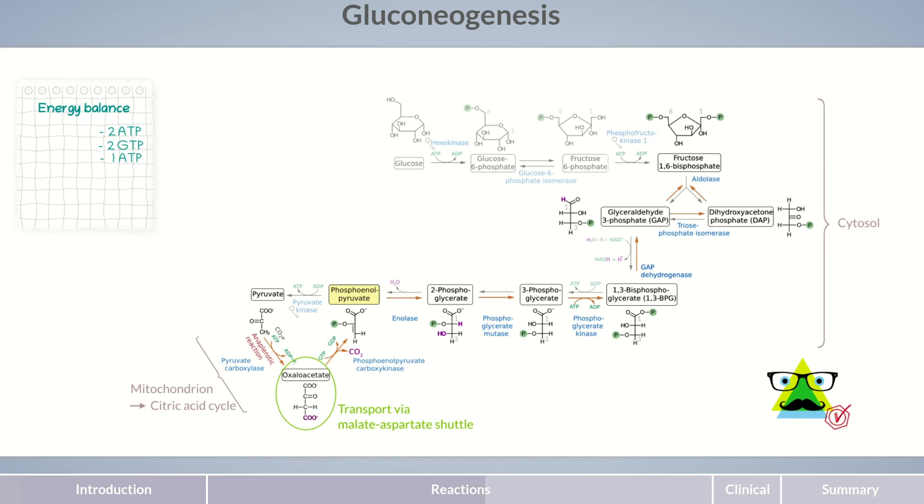Again, for each molecule of glucose, two additional molecules of ATP need to be deducted from the energy balance. The subsequent conversion of 1,3-bisphosphoglycerate to glyceraldehyde-3-phosphate requires one reducing equivalent of NADH and H+, leading to a total expenditure of 2 NADH and H+ per glucose molecule.